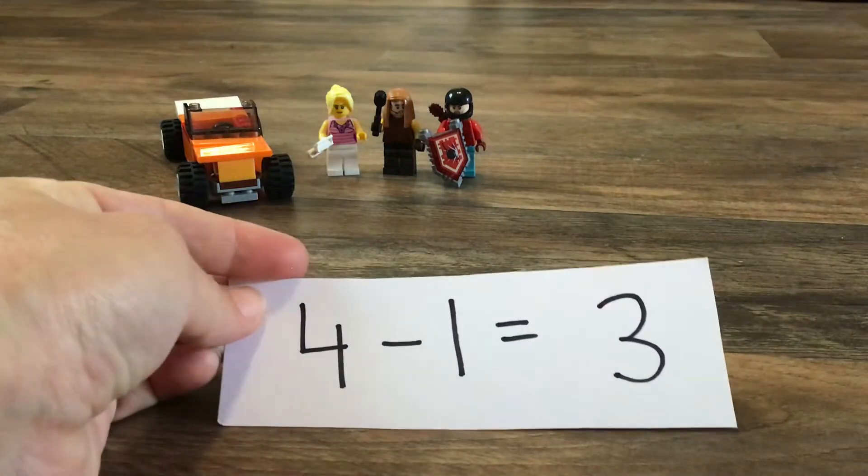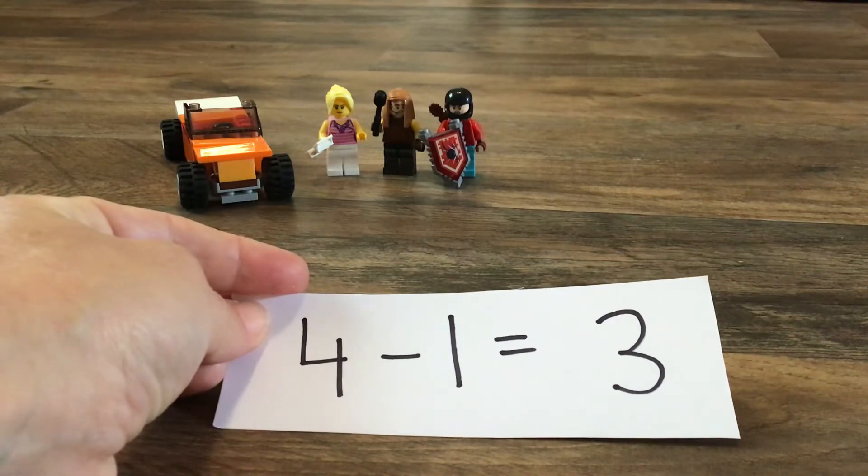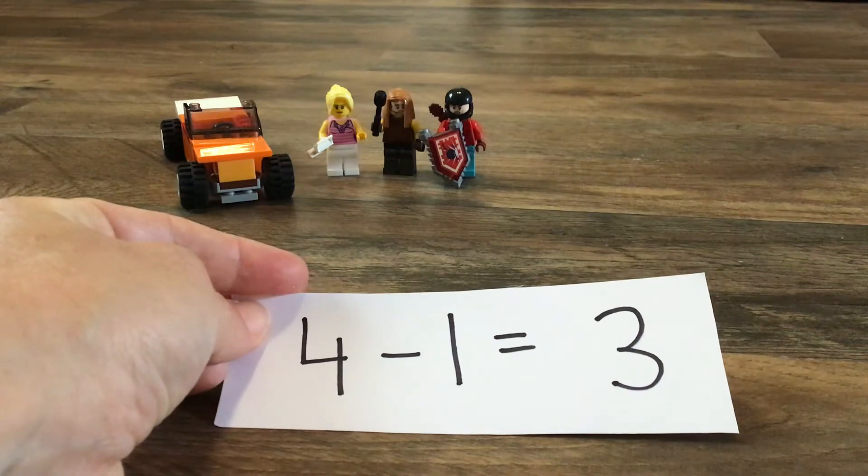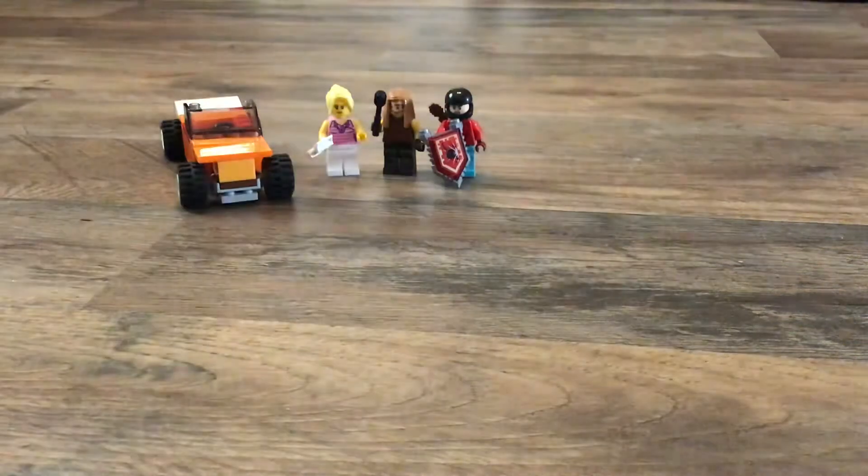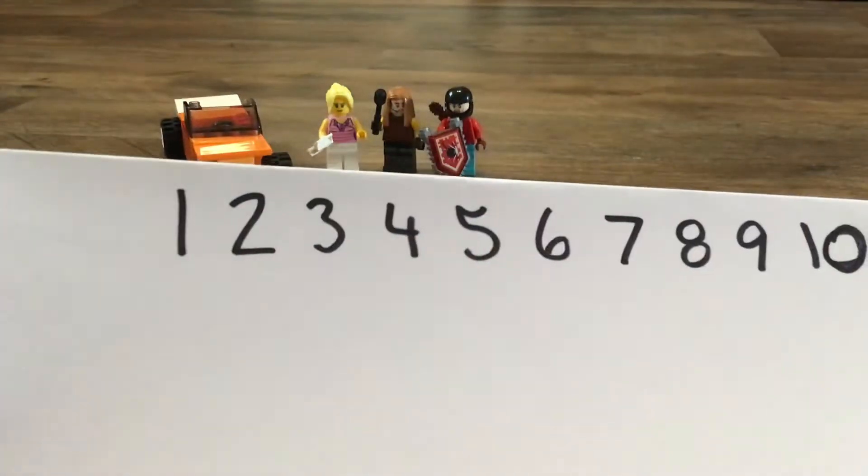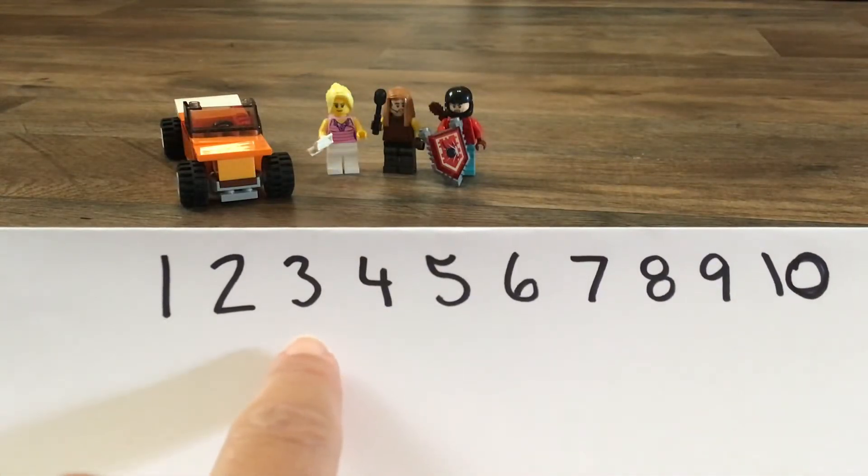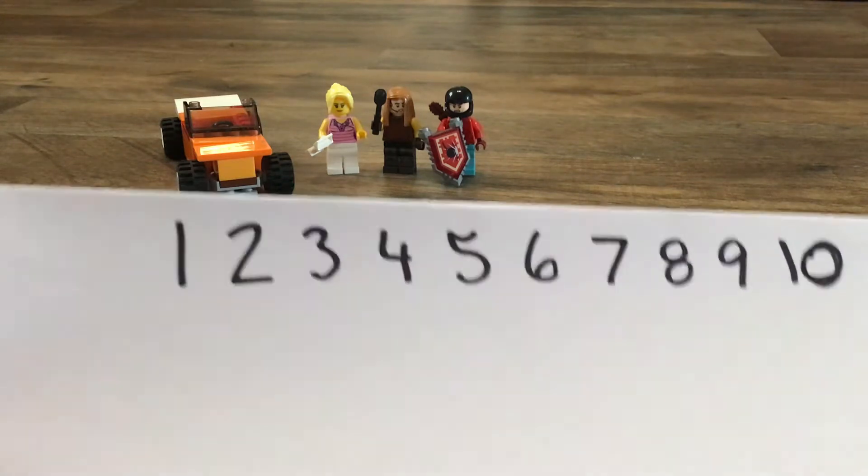So that looks like this. Four. We had four. Minus one. One, we took away one, equals three all together. Let's look at that number line and see if that makes sense. All right. So the number before four is three. I think we're on the right track here.